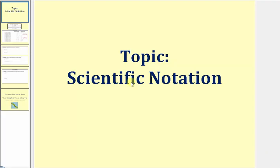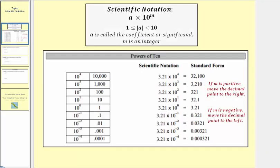Welcome to a lesson on scientific notation. Scientific notation is notation often used to express extremely large and extremely small numbers, where scientific notation must be in the form of a times 10 raised to the power of m. The absolute value of a must be greater than or equal to 1 and less than 10, and m, the exponent on 10, must be an integer. A is often called the coefficient or significand.